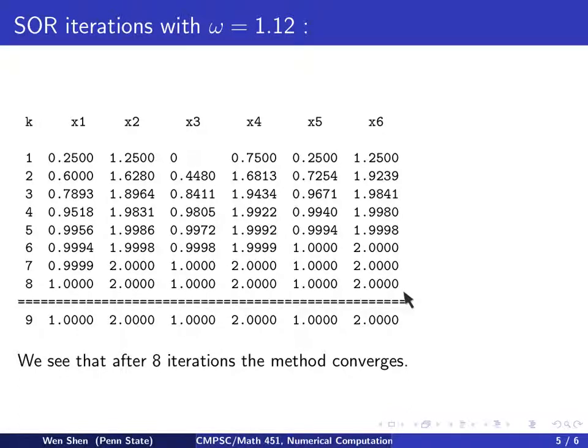we see that after 7, actually 8 iterations, we'll be guaranteed that our approximate solution is accurate up to 4 decimal places. So it's even better.